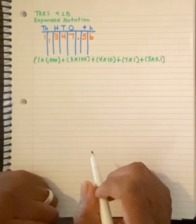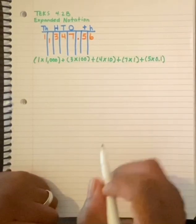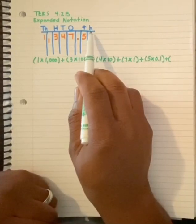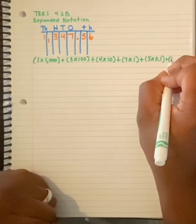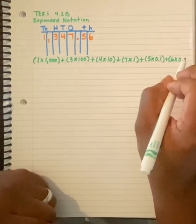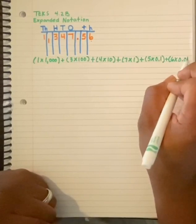And last but not least, six groups of hundredths. So that would be six groups of zero decimal zero one.